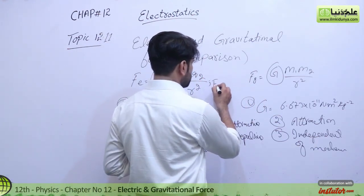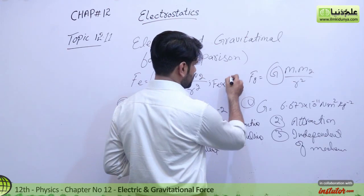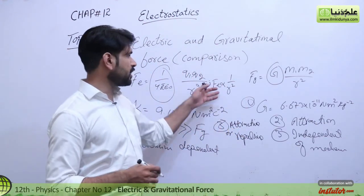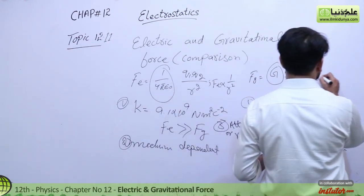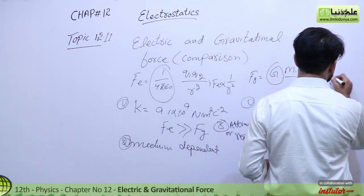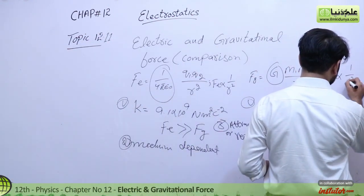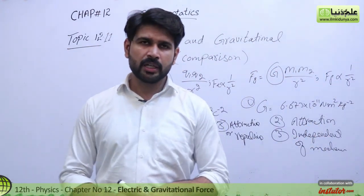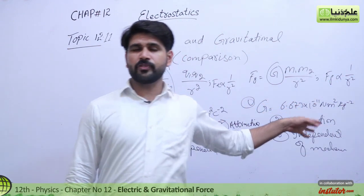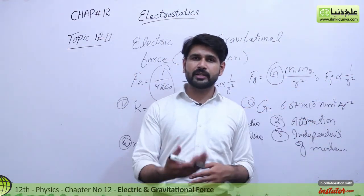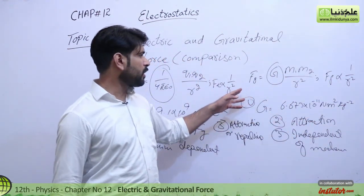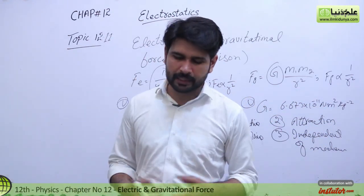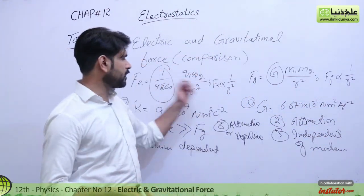One thing that is the same: the electric force varies inversely with the square of the distance, and similarly, the gravitational force also varies inversely with the square of the distance. So both forces follow the inverse square law — the electrical force changes with the inverse of the square of the distance just like the gravitational force.